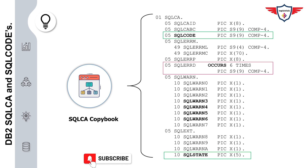The next important field is SQLERRM, which is a group variable that includes a length and a message. This field is generally used when you are not able to understand the reason for failure by looking at SQLCODE or SQLSTATE, so it is typically used for complex debugging.